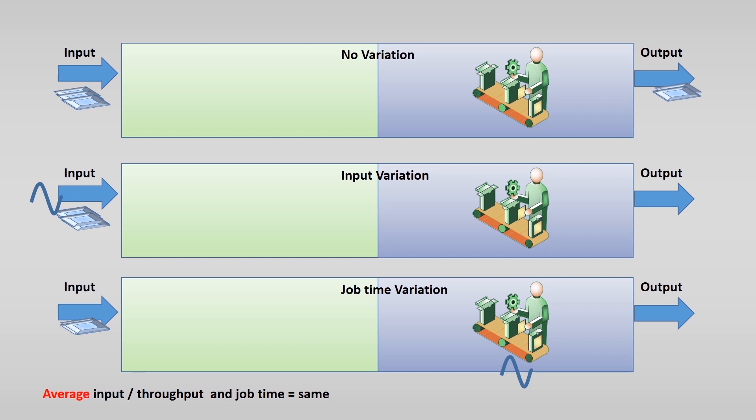But suppose the input does have variation. And the input does not arrive at regular intervals, although on average the input is the same. The time it takes to do the job is regular like the first example. In this example, you cannot make up for the lost time that an input is not available because we tried to have 100% utilization.